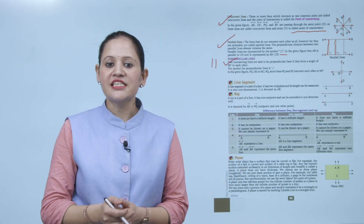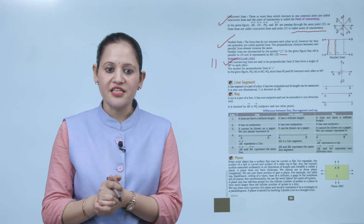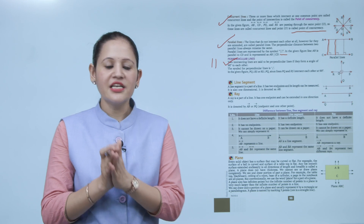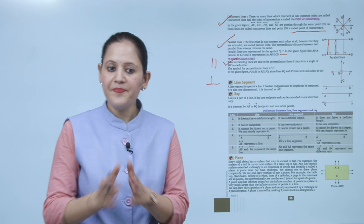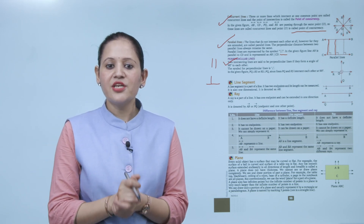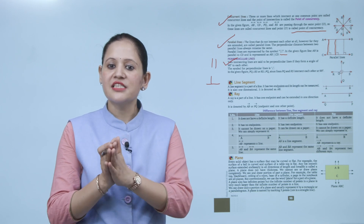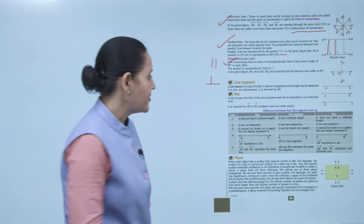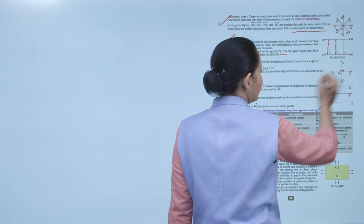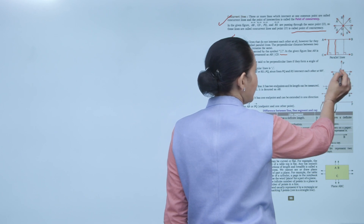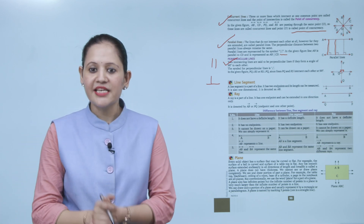Next is perpendicular lines. Two intersecting lines are said to be perpendicular if they form an angle of 90 degrees with each other. The symbol for perpendicular lines is ⊥. In the given figure, PQ is perpendicular to RS and RS is perpendicular to PQ, since lines PQ and RS intersect each other at 90 degrees — so they are known as perpendicular lines.